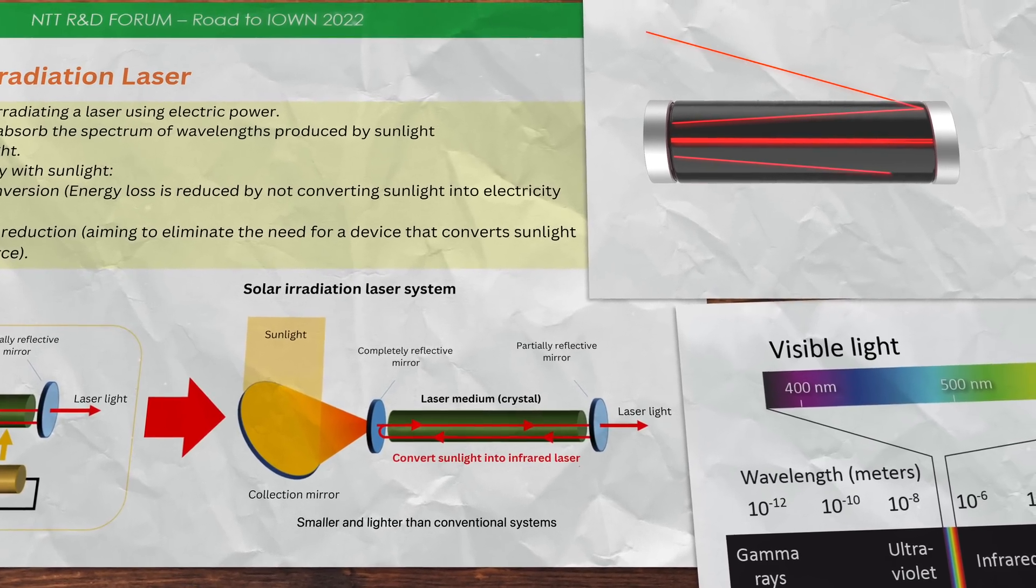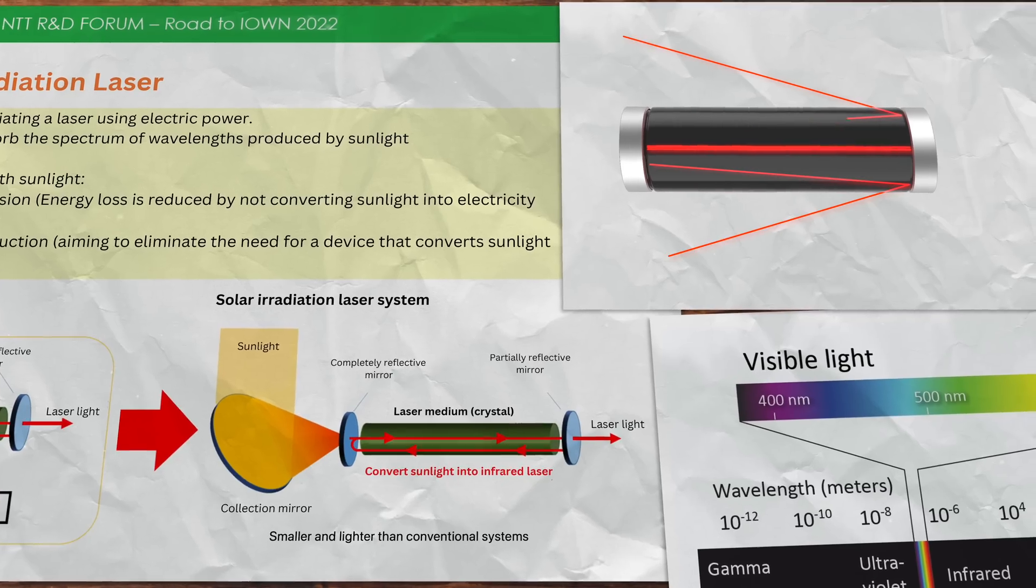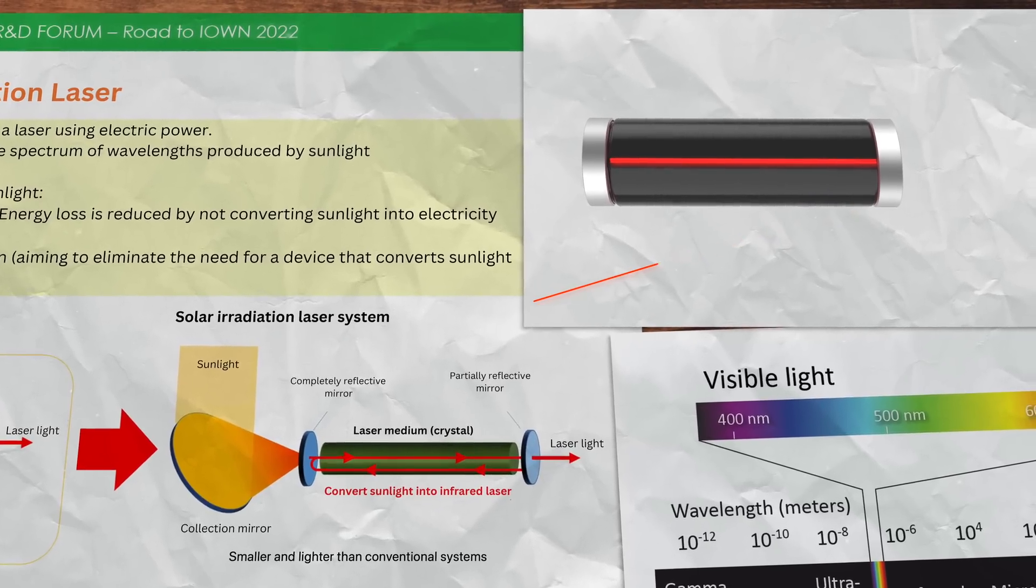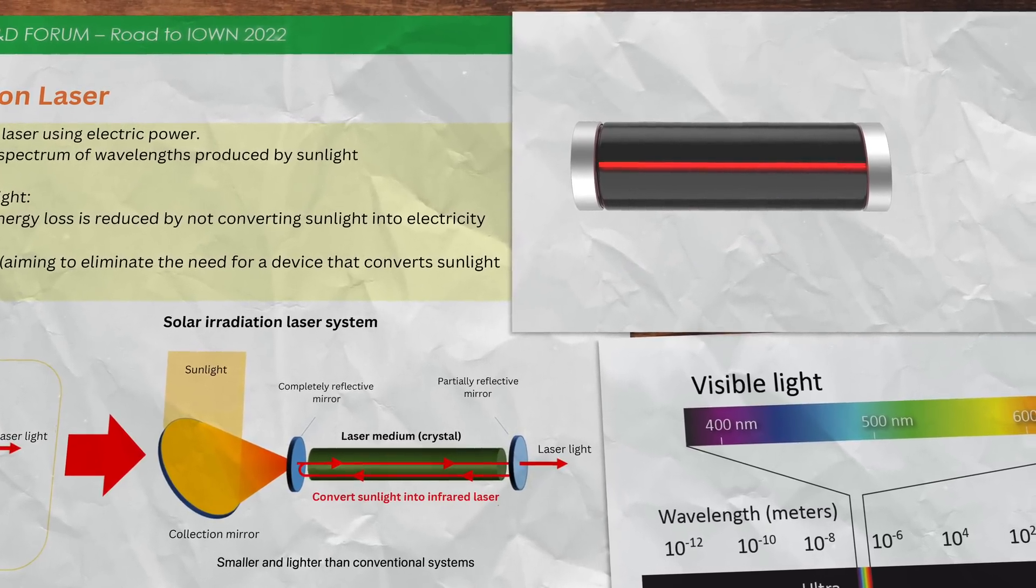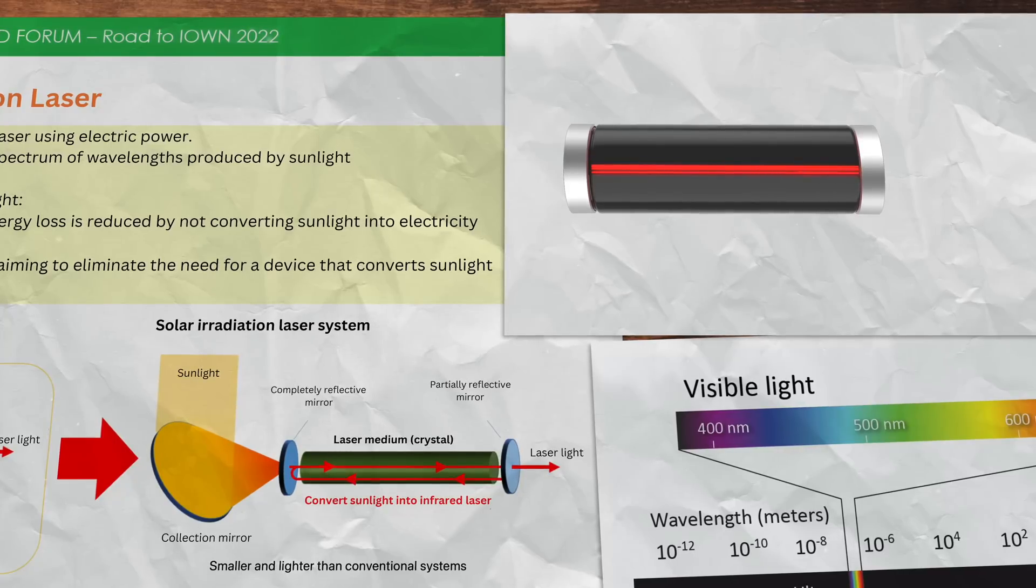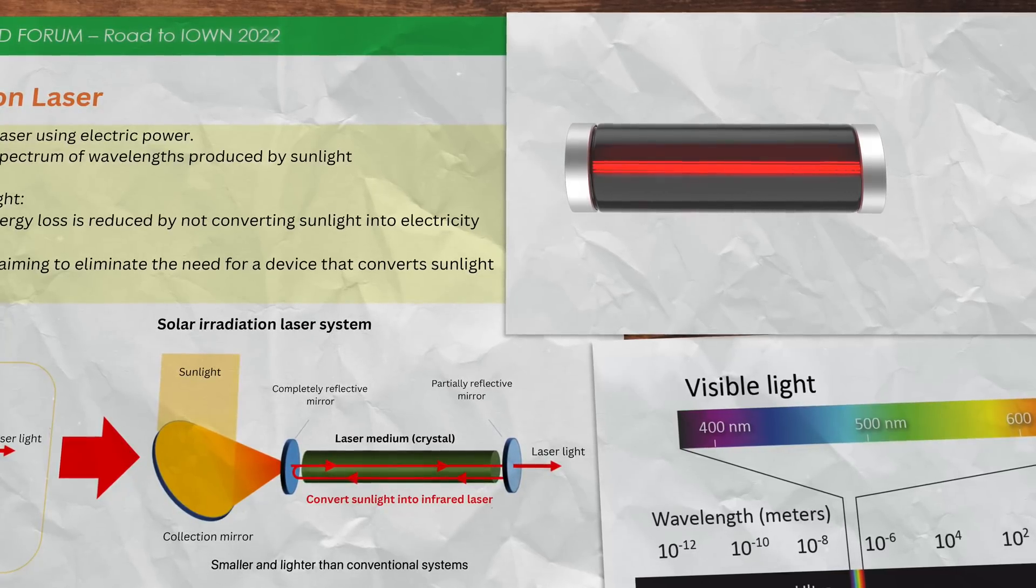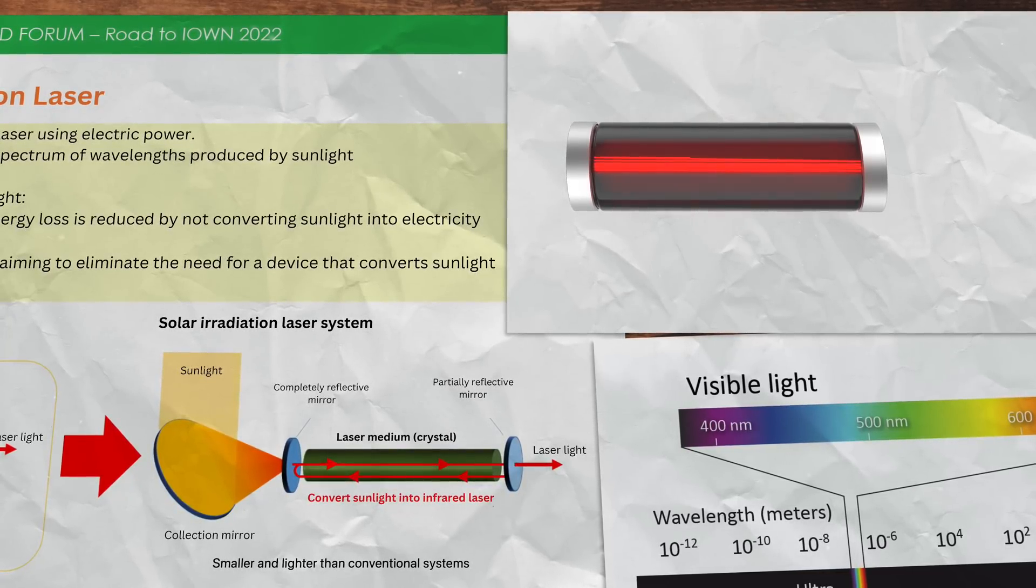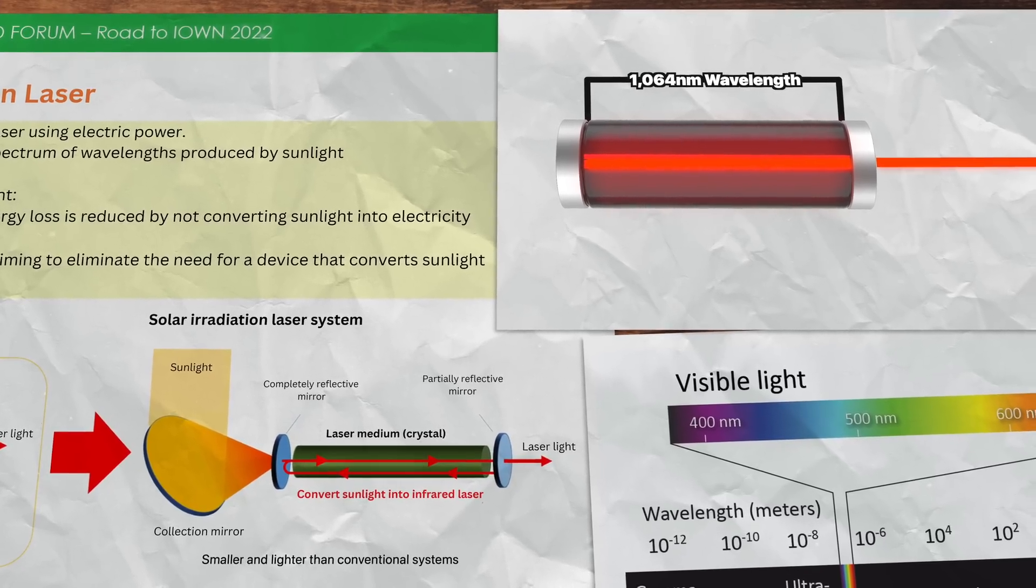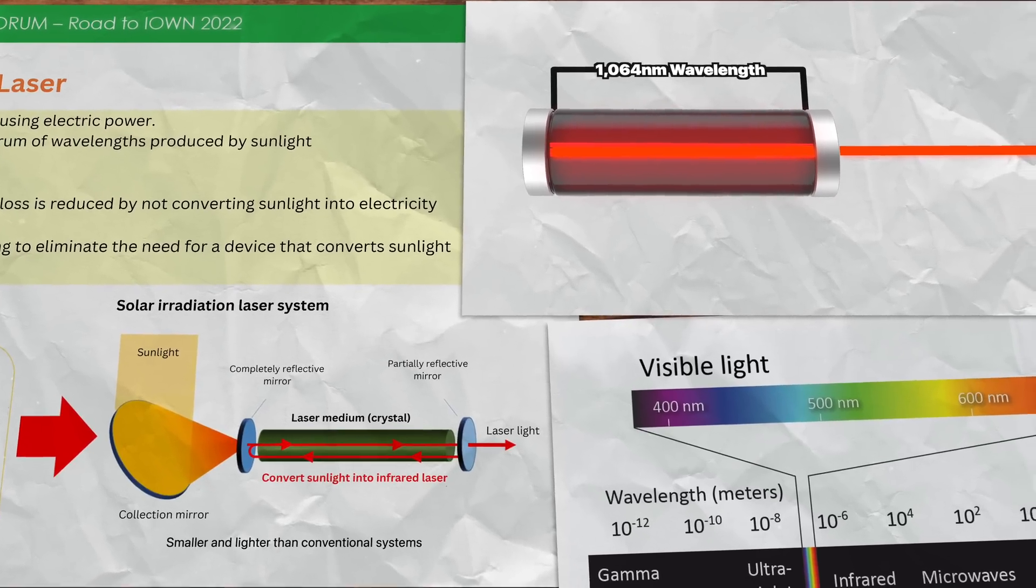Light rays that don't line up with the axis of the cylinder get reflected and eventually exit. I'm curious what the NTT team plans to do with this light since that's how the efficiency of the system can be increased. But the light parallel to the axis of the cylinder gets intensified and narrowed in wavelength. The resulting standing wave means only light of a certain wavelength can exist inside the cavity where it is then allowed to pass through the partially reflective mirror. The end result is a 1064 nanometer infrared wavelength laser invisible to the naked eye.